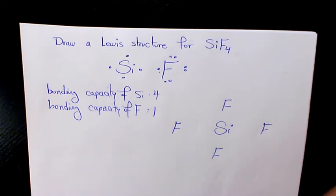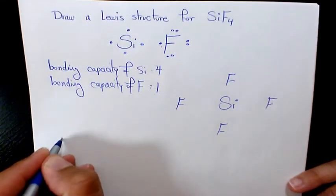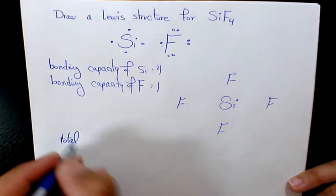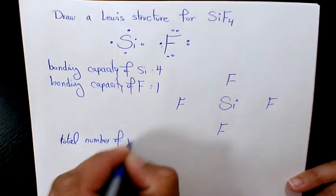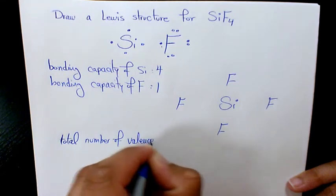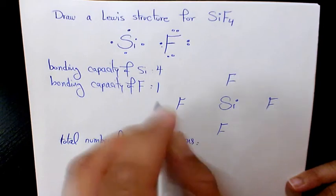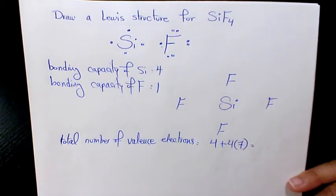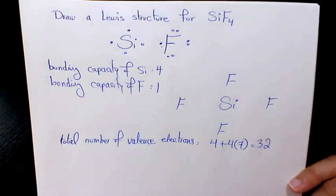This number represents the total number of electrons, or dots, you will draw in your Lewis structure. So the total number of valence electrons is 4 plus 4 times 7, which is 4 plus 28, giving us 32 total valence electrons.